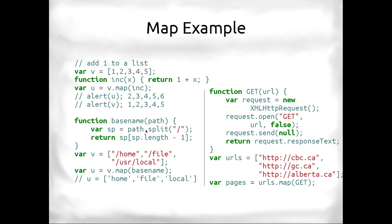We can do things like, say, get the base name, get the file names of a list of files. We can do it the same way. Here I have a list of files. I'm going to go v.map, base name. And u would be home, file, local. But all this stuff would be unchanged.